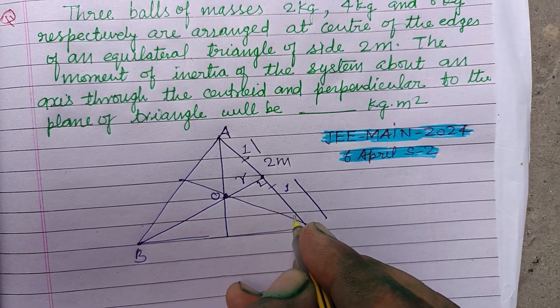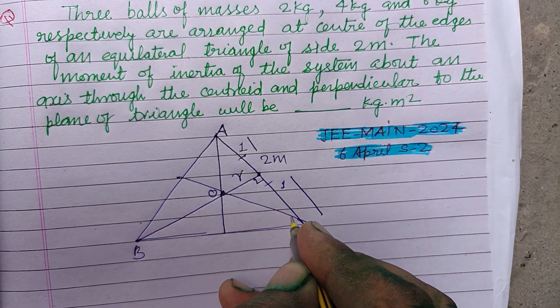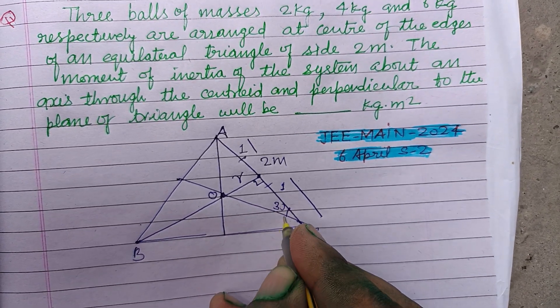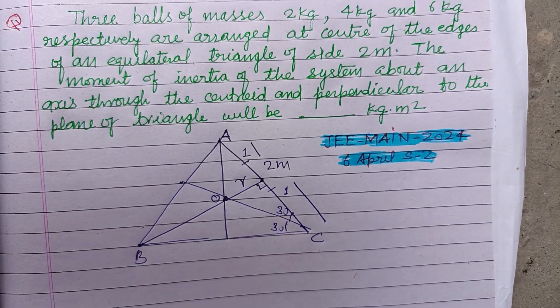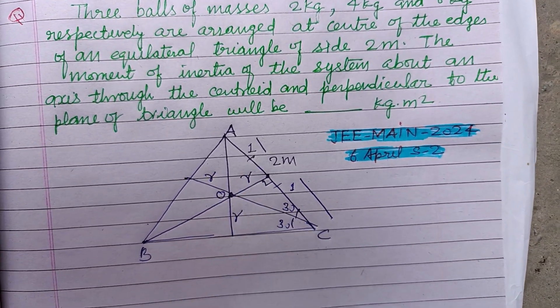And this angle is 60, therefore 30, 30. This is also R, this is also R.